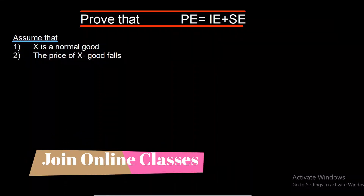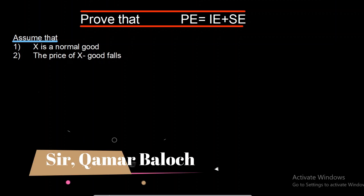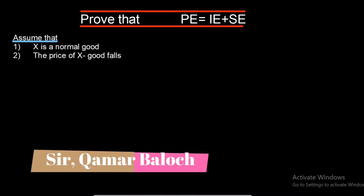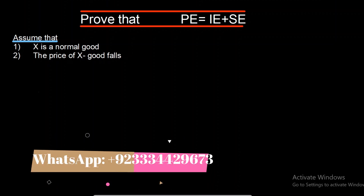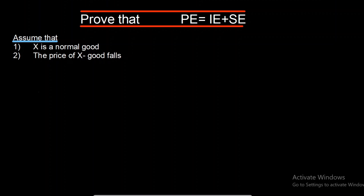Assalamu alaikum everyone, hope you are doing well. In today's class I'll look into one important topic of A2 microeconomics from the consumer behavior unit, number seven. The concept is to prove that price effect is equal to income effect plus substitution effect. We assume that X is a normal good and there is a fall in price of good X.